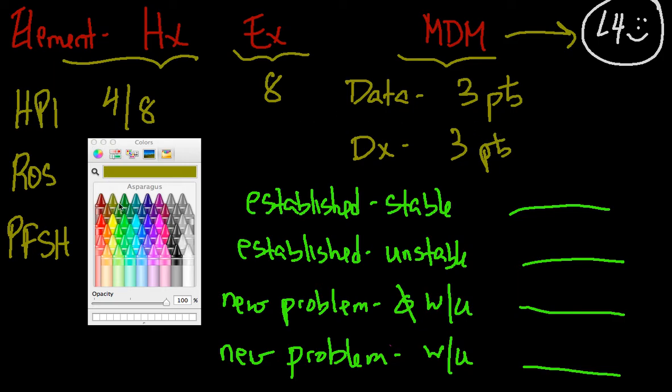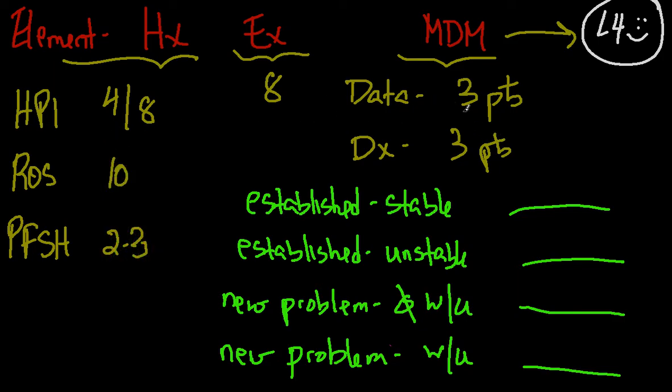It's easy to remember: you need three points added up for data, three points added up for diagnosis, and that will put your MDM element in position for level four billing.